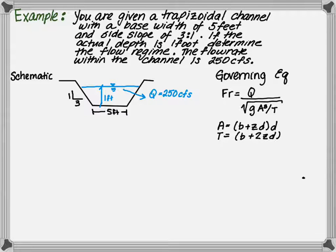In order to determine the flow regime, you need to first calculate the Froude number. The Froude number is the flow rate divided by the square root of gravity times the area cubed divided by t, or top width.